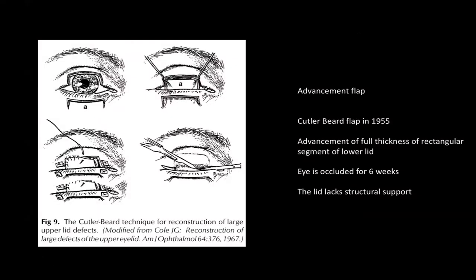Coming to advancement flaps, which are most commonly used: one of the earliest described was the Cutler-Beard flap for upper eyelid defects, described in 1955. There is some controversy — some texts say it is purely a skin flap not including the tarsus, while some literature describes it as a full thickness segment of lower lid. The traditional description is that it is just skin and minimal subcutaneous tissue without the tarsal plate, requiring an additional cartilage graft for support.